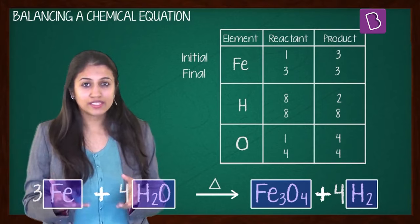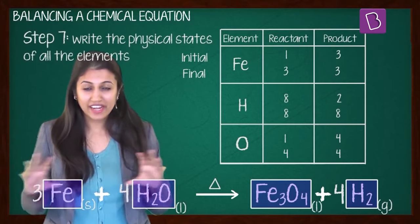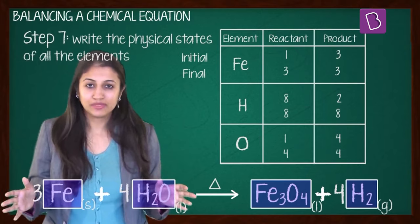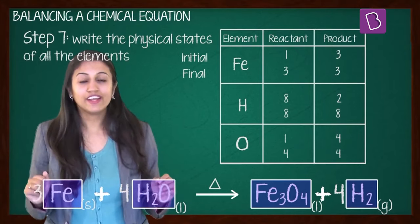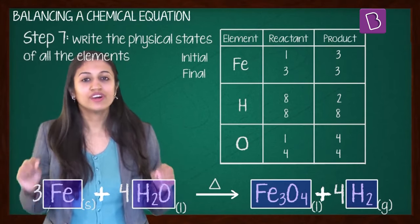So now the last step, step number 7, is to write the physical states of all these elements. Add that and your balanced equation is now ready to go.